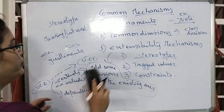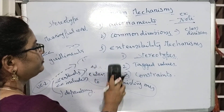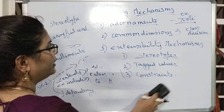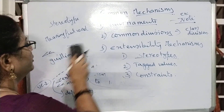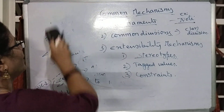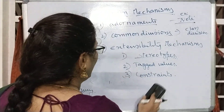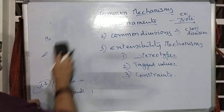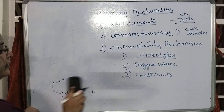Now we are going to see tagged values. Stereotypes add some meaning to the building blocks. They add some extensions to the building blocks. What are the building blocks? Classes, use cases — these are some building blocks to the system. Stereotypes add some extra meaning to the building blocks, like 'include' and 'extend.'